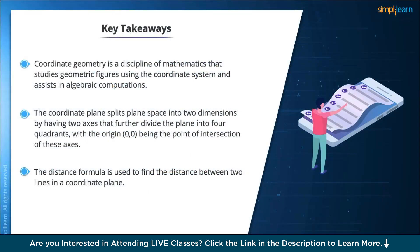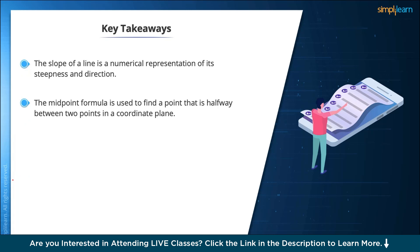Key takeaways. Coordinate geometry is a discipline of mathematics that studies geometric figures using the coordinate system and assists in algebraic computation. The coordinate plane splits the plane space into two dimensions by having two axes that further divide the plane into four quadrants. With the origin (0,0) being the point of intersection of these axes, the distance formula is used to find the distance between any two points in the coordinate plane. The slope of a line is the numerical representation of its steepness and direction. The midpoint formula is used to find a point that is halfway between two points in a coordinate plane.